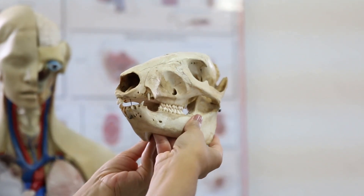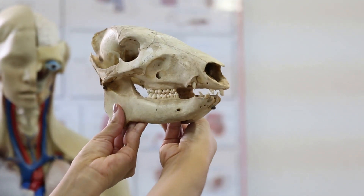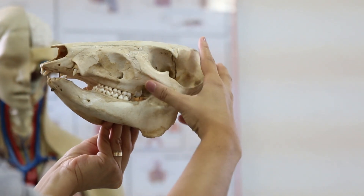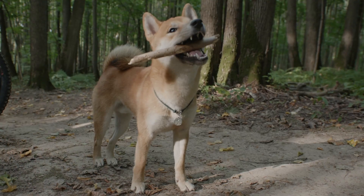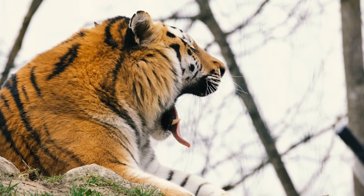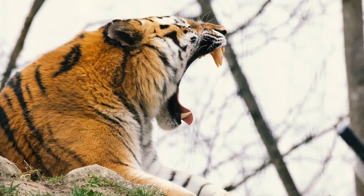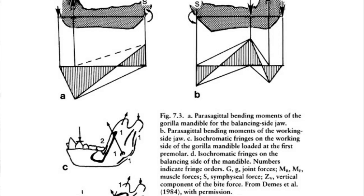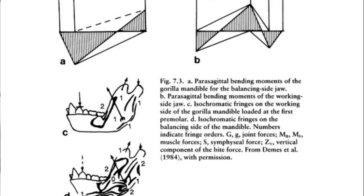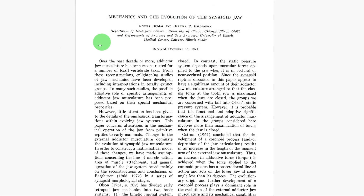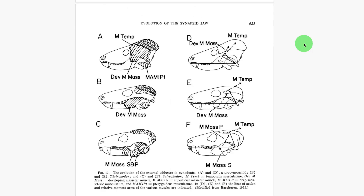Sometimes skull scientists want to know how well skulls can bite, and sometimes also how well different skulls bite compared to each other. Traditionally, this has been estimated using linear measurements of leverage, moment arm analysis, beam theory, and others.